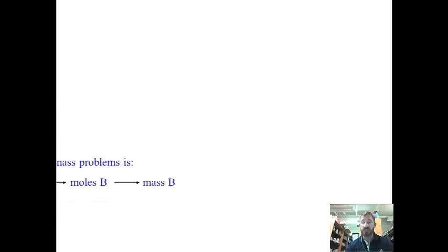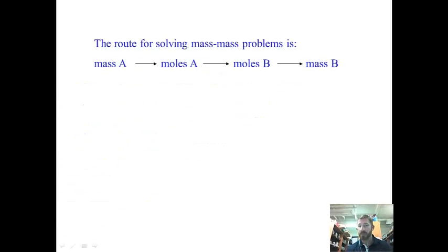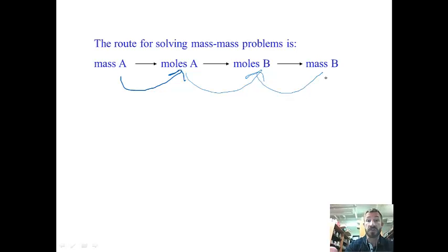So let's do a problem. So this is a roadmap that we're going to be doing to do the four steps. We're going to go from mass of A to moles of A, from moles of A to moles of B - this is where we use a new thing, the mole ratio from the balanced equation - then we'll go from moles of B to mass of B.